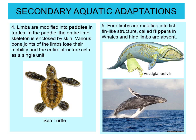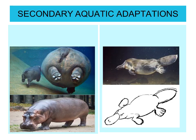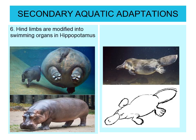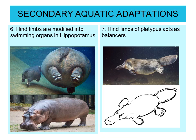Hind limbs are modified into swimming organs — for example, in the case of hippopotamus. The hind limbs of the platypus act as balancers during swimming.